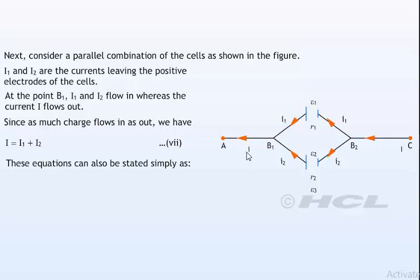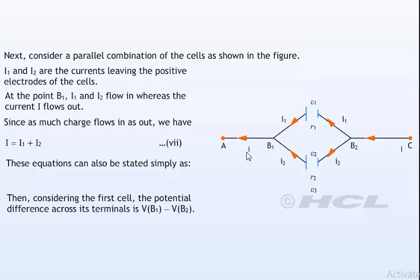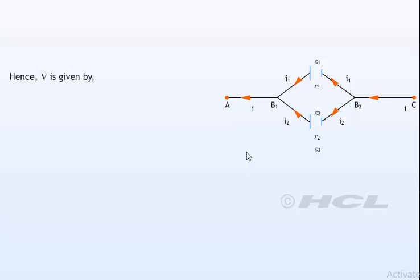Let V of B1 and V of B2 be the potentials at B1 and B2 respectively. Then, considering the first cell, the potential difference across its terminals is V of B1 minus V of B2.